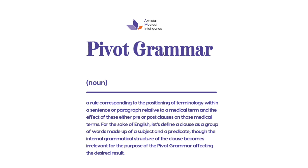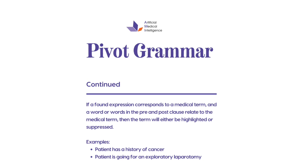And the effect of these either pre- or post-clauses on those medical terms. For the sake of English, let's define a clause as a group of words made up of a subject and a predicate, though the internal grammatical structure of the clause becomes irrelevant for the purpose of the pivot grammar affecting the desired result. If a found expression corresponds to a medical term and a word or words in the pre- and post-clauses relate to the medical term, then the term will either be highlighted or suppressed. Some simple examples would include: the patient has a history of cancer, or the patient is going for an exploratory laparotomy — both of which tell the AI engine that these are not valid instances of cancer or exploratory laparotomy.